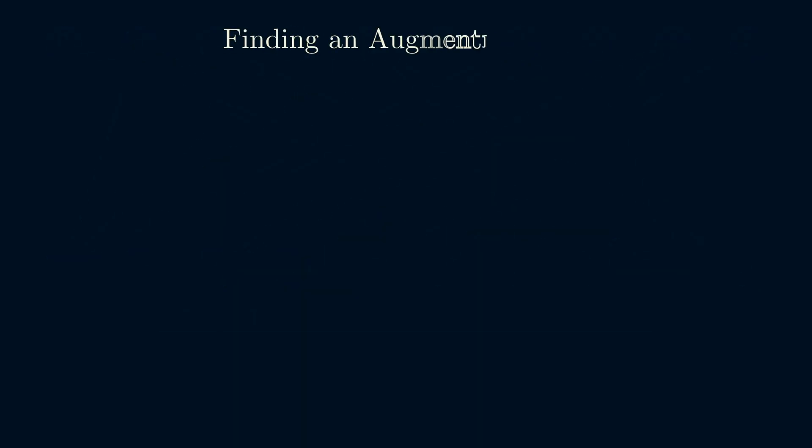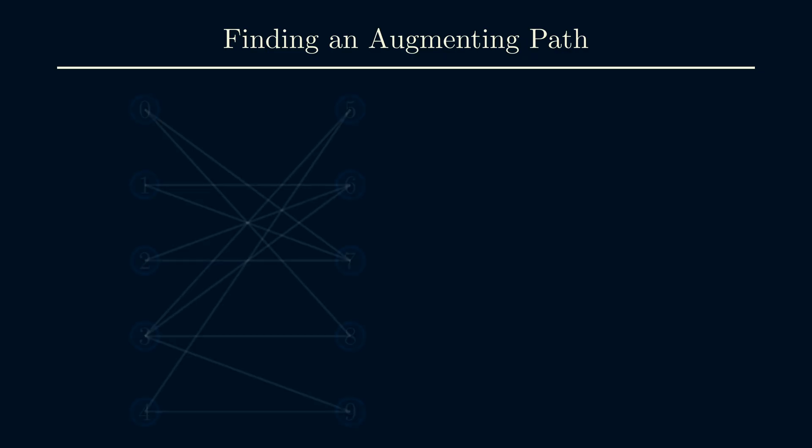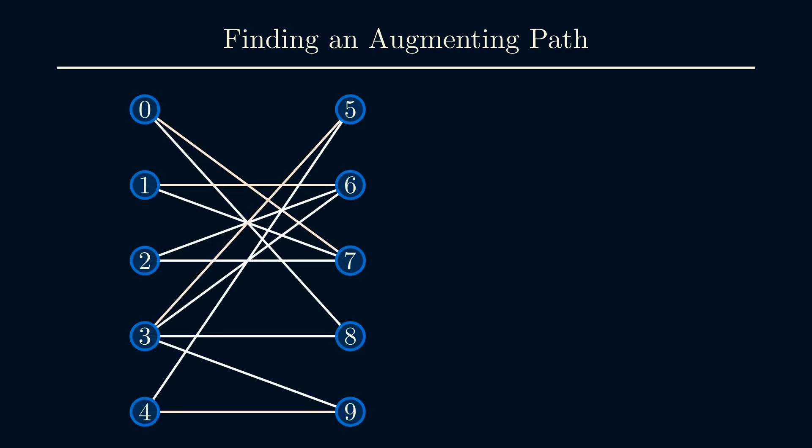Now let's go into the technicalities of how to find an augmenting path. Consider this graph again, and this matching. This is not a maximum matching, because vertices 2 and 8 are unmatched, and there is a matching that matches everyone. So our goal is to find an augmenting path from 2 to 8. Let's follow our intuition, and try to build an augmenting path from scratch. We start at vertex 2, since it's unmatched.